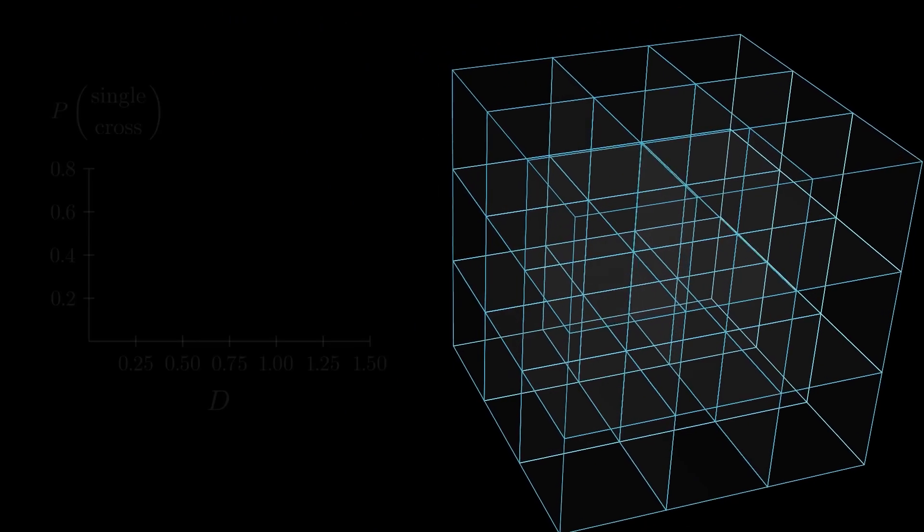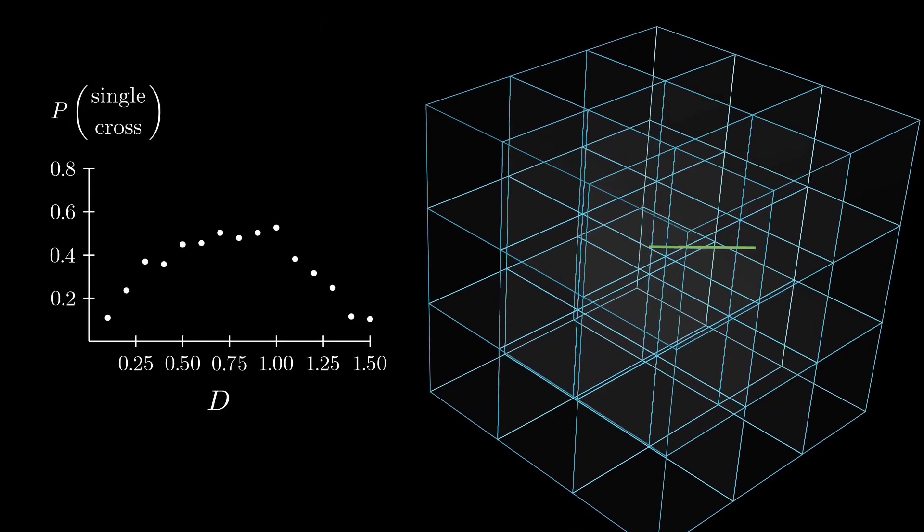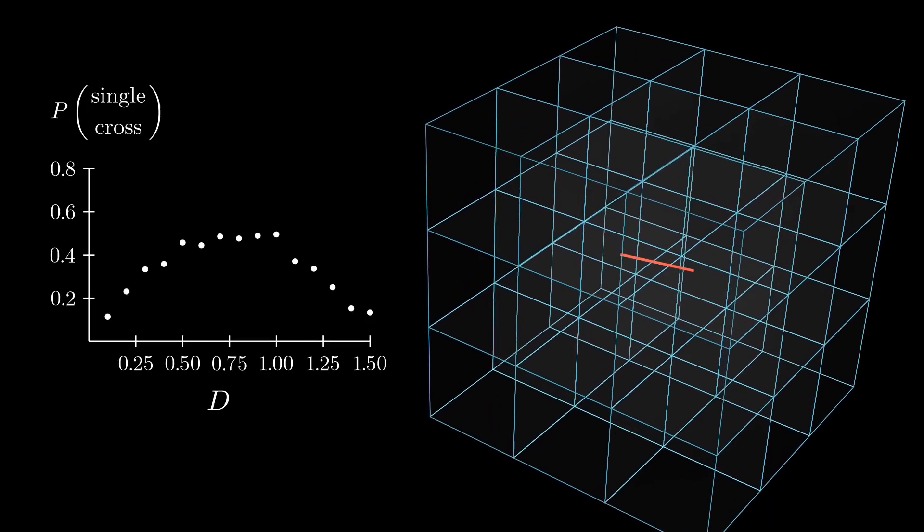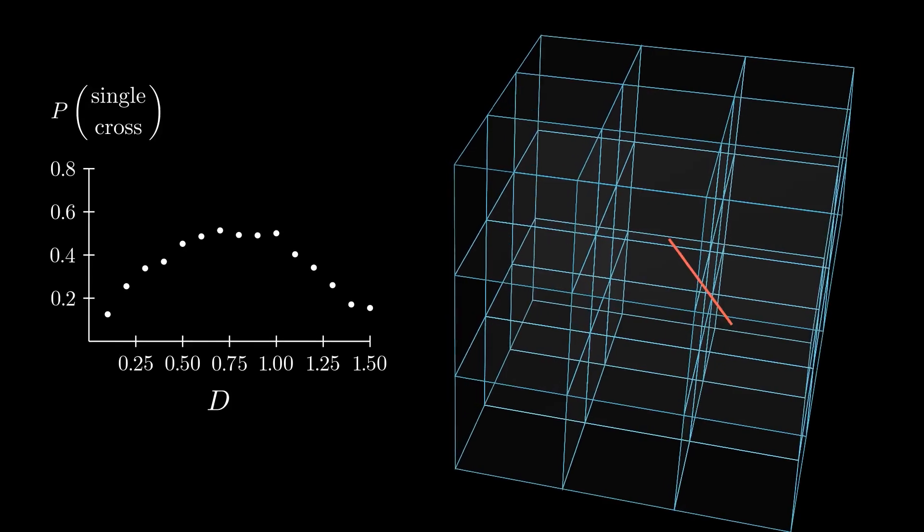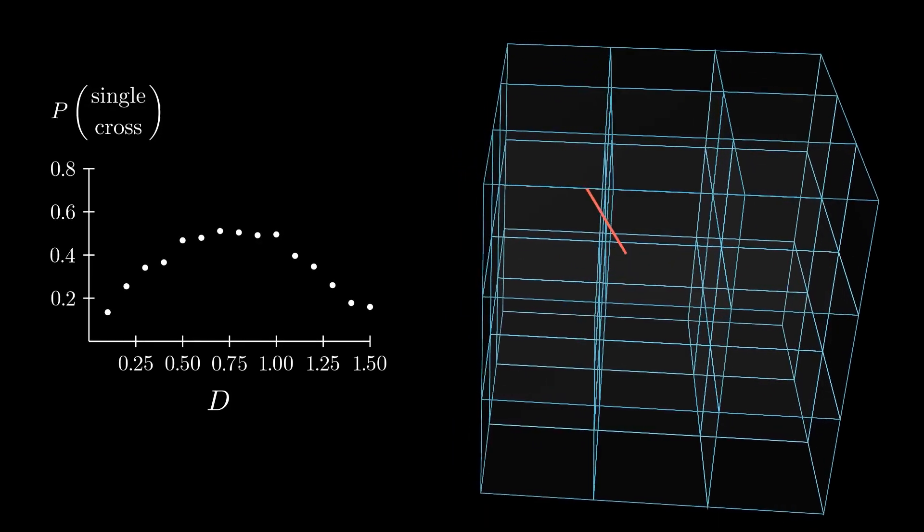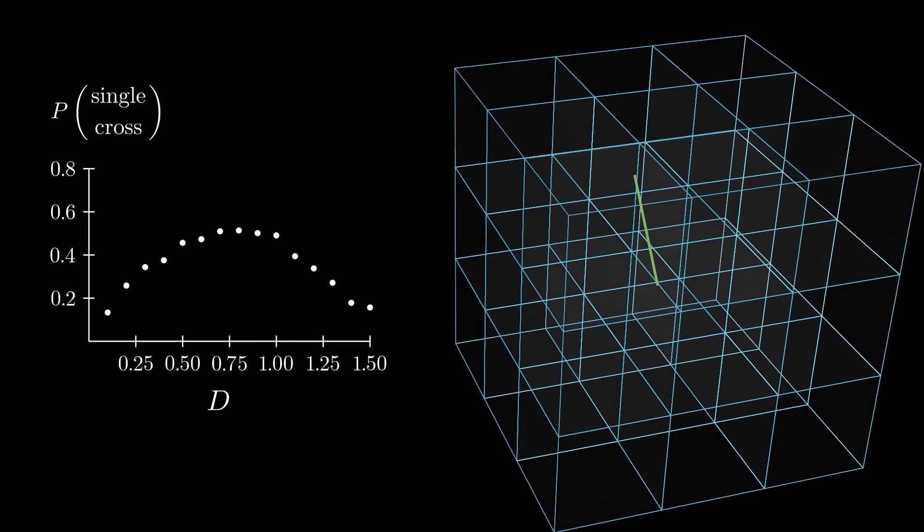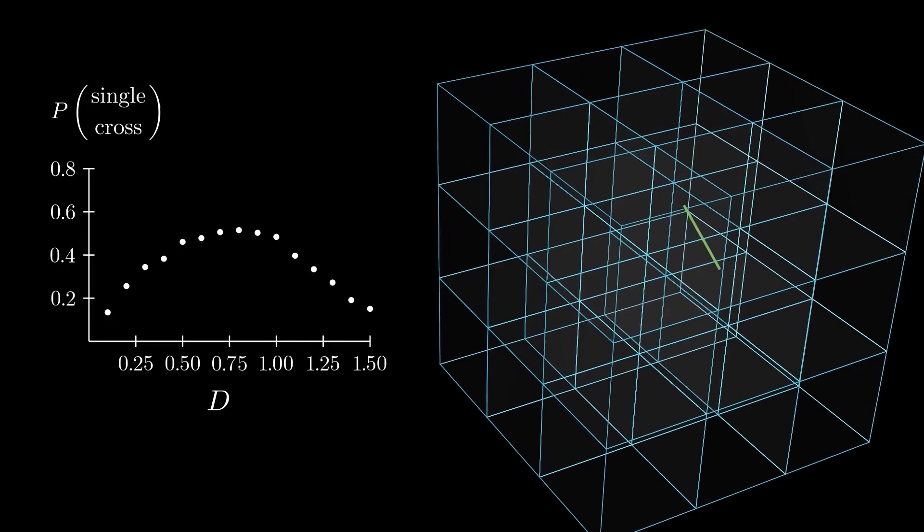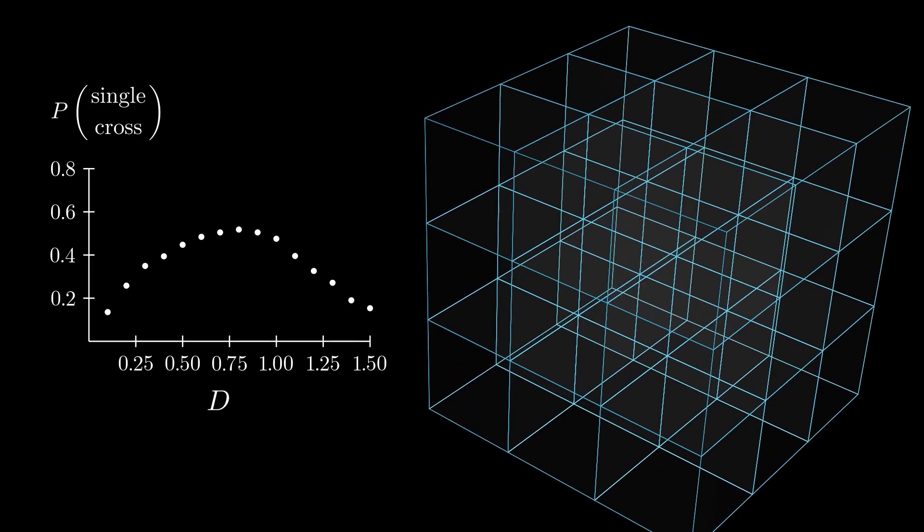We can sample random line segments and keep track of how many have a single cross, highlighted in green, and how many have zero or more than one cross, in red. If we repeat this many times for various lengths D, we will see that there is a maximum somewhere around 0.75, but we will have to do better if we want any hope of obtaining the 10 significant digits requested in the puzzle statement.